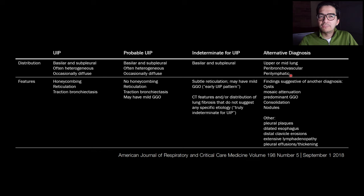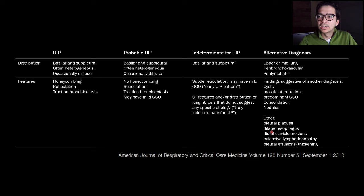The second way is if you see other findings that suggest another diagnosis. For example, cysts might make you think of cystic lung disease; mosaic attenuation, particularly on expiratory images, might suggest chronic hypersensitivity pneumonitis; ground glass opacity, consolidation, or nodules might also point elsewhere. And findings outside the lungs — like pleural plaques, a dilated esophagus, clavicle erosions, or lymphadenopathy — might all favor an alternative diagnosis rather than UIP.